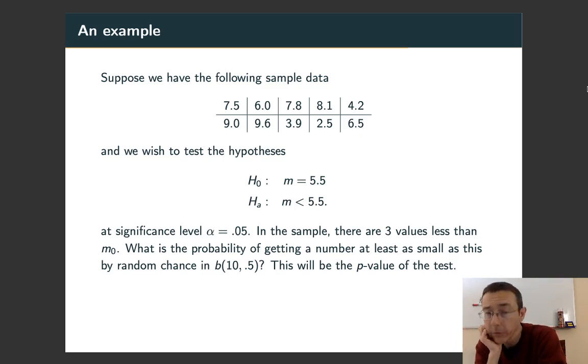So my procedure is to compute this capital Y. I've got to go through and figure out how many values in this data set are actually less than the median. Here the number is 3, and I need to know what's the probability of getting a number at least that small, just by random chance, in the binomial distribution B(10, 0.5). That probability is going to be the p-value of this test.